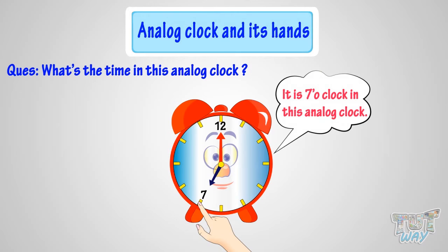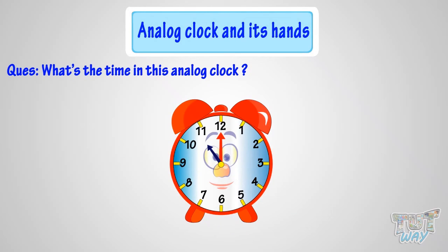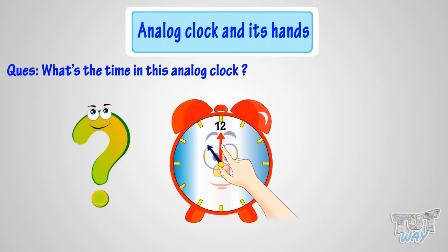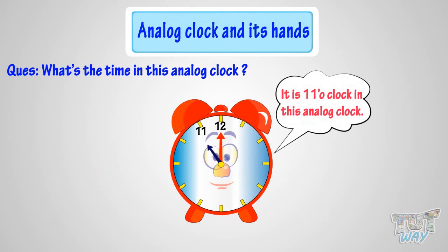Next example. Can you tell me what's the time in this analog clock? When the minute hand is at 12, it is time to the hour. But to which hour? The hour hand tells the hour. As the hour hand is pointing at 11, so it's 11 o'clock. Good.